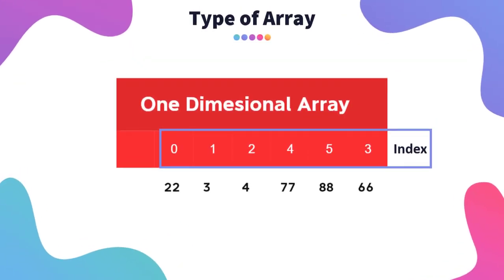For example, if we have a one-dimensional array — here the array is 22, 3, 4, 77, 88, 66 — observe that the index of the first element, that is 22, is zero. So the index always starts with zero.